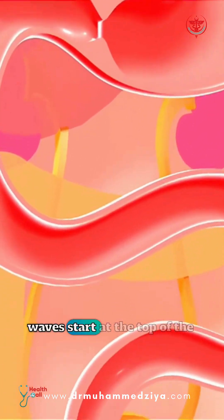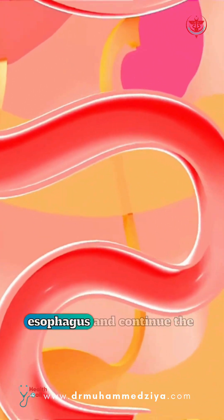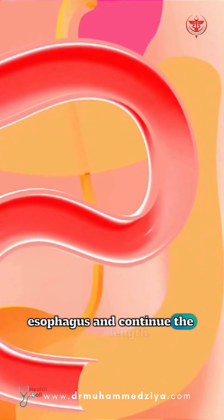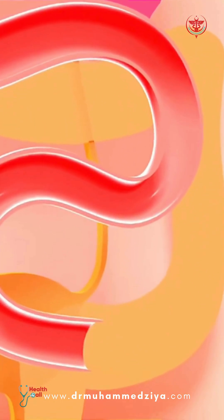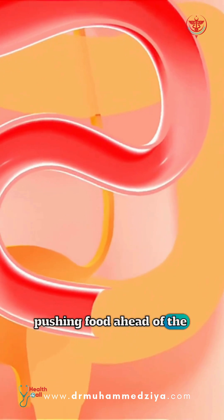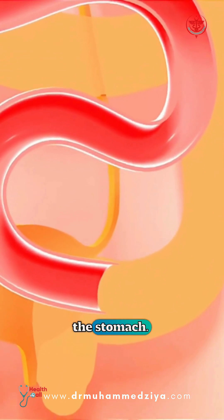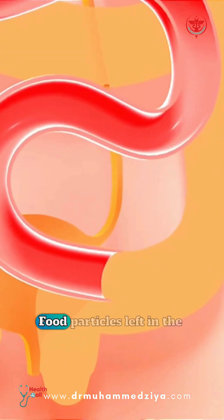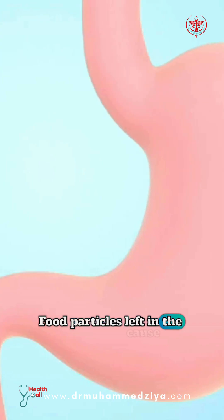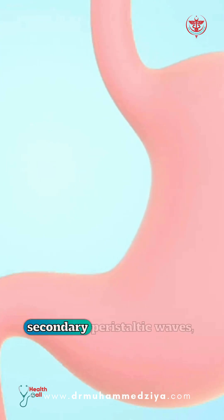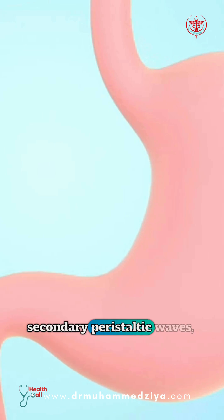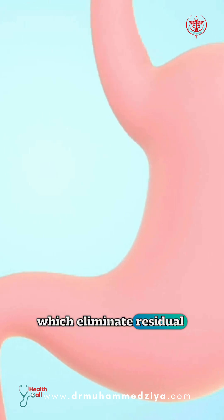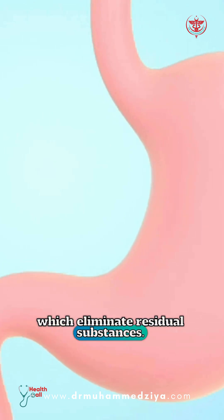Peristaltic waves start at the top of the esophagus and continue the entire length, pushing food ahead of the wave into the stomach. Food particles left in the esophagus cause secondary peristaltic waves, which eliminate residual substances.